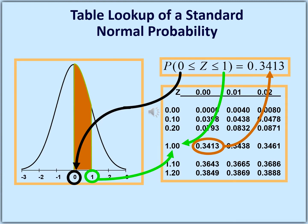Suppose we need to find the probability of z between 0 and 1. From the top row take 0, from the first column take 1.0. The value inside the table indicated by the arrow is 0.3413 — that is the probability that z is between 0 and 1.